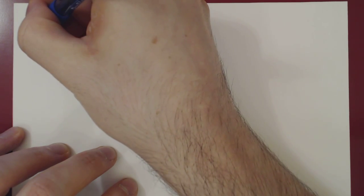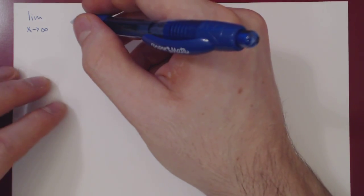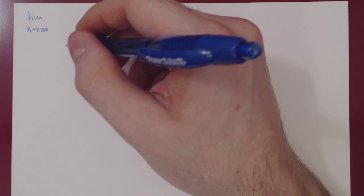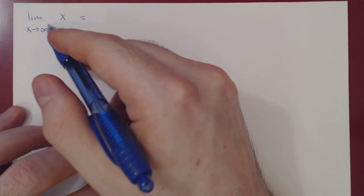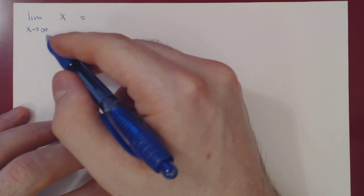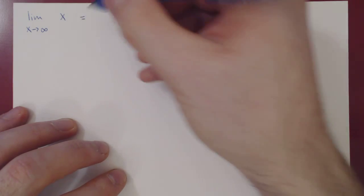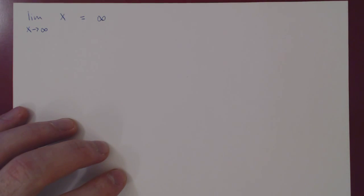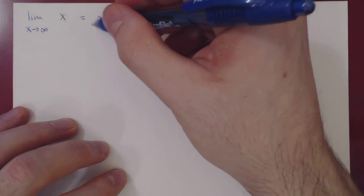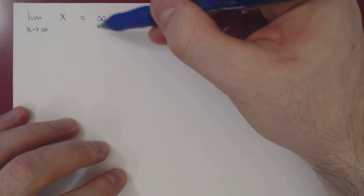Limit as x goes to positive infinity of x. This is pretty obvious — as x goes to infinity, x is getting bigger and bigger, so we simply write the limit is infinity. Be careful that the limit doesn't really exist. We use the notation 'equals infinity' to say that the limit is undefined, but specifically by blowing up.